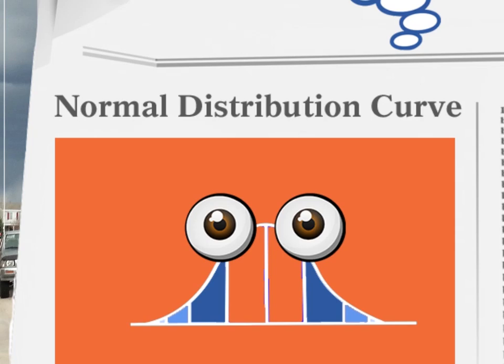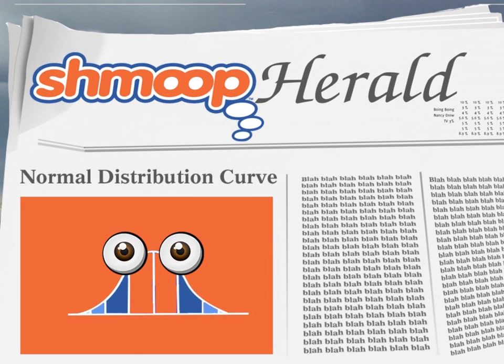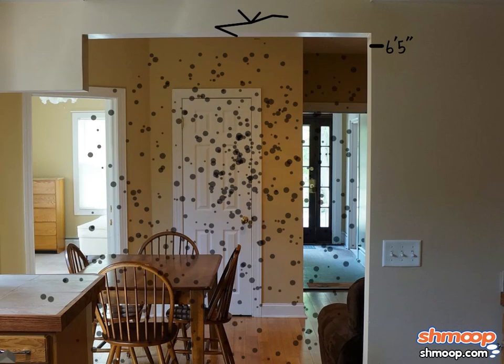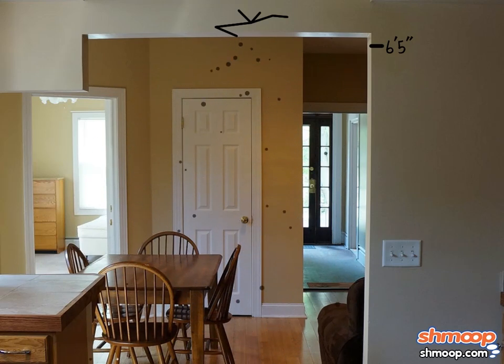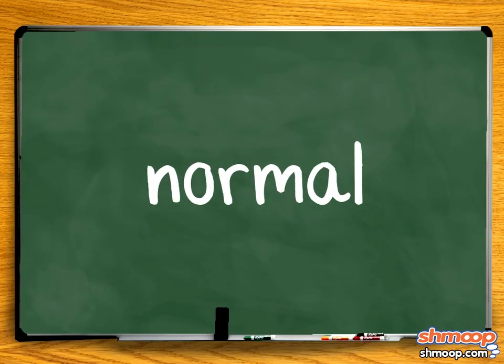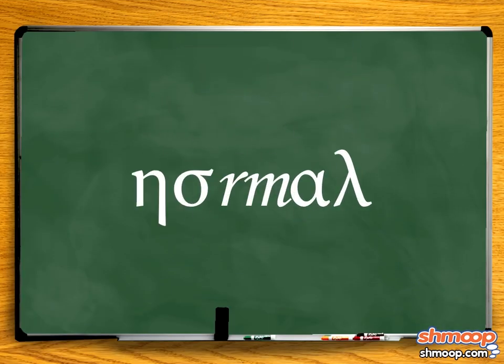Normal Distribution Curve, a la Shmoop. All Gene the Green Bean wants to be is normal. As you might imagine, however, someone with the nickname Green Bean might have some trouble in the normalcy department. Of course, Gene may be perfectly normal as a human being. But we're more interested in normal in the mathematical sense.